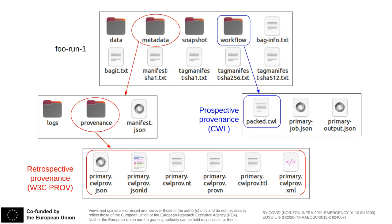The retrospective provenance files are different serializations of the same RDF graph that represents the relationships between the various entities and processes involved in the execution, according to an extension of the W3C-PROV standard. The workflow, on the other hand, is stored in CWL-PACT format, though the original user-supplied files are still available in the snapshot directory.